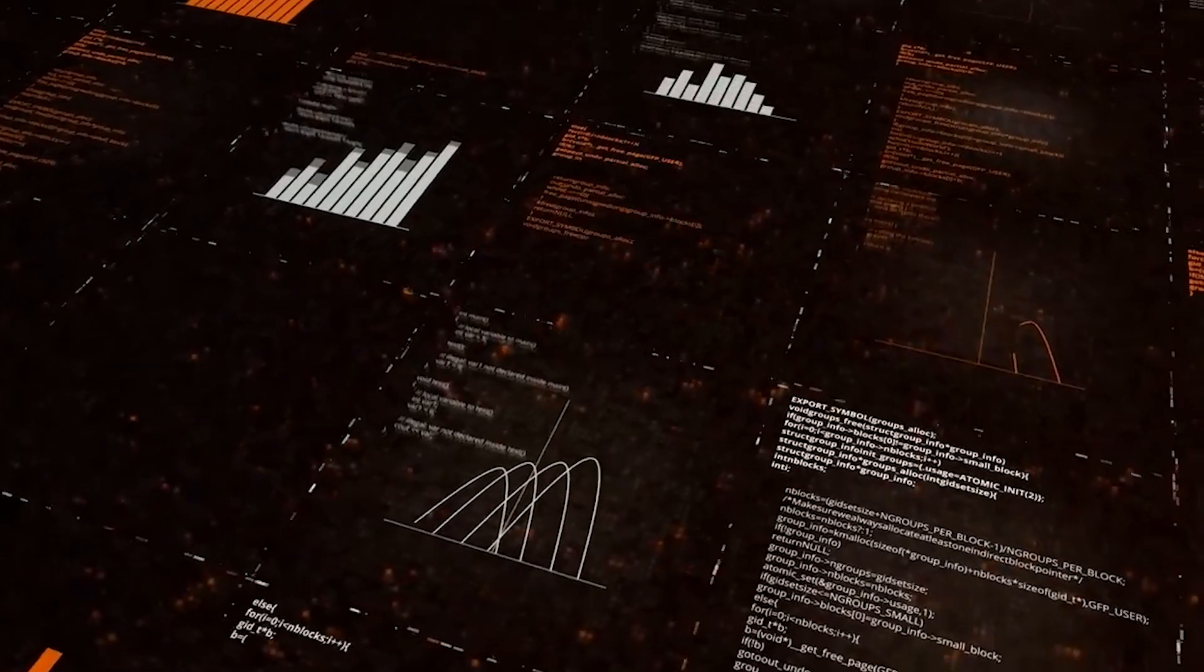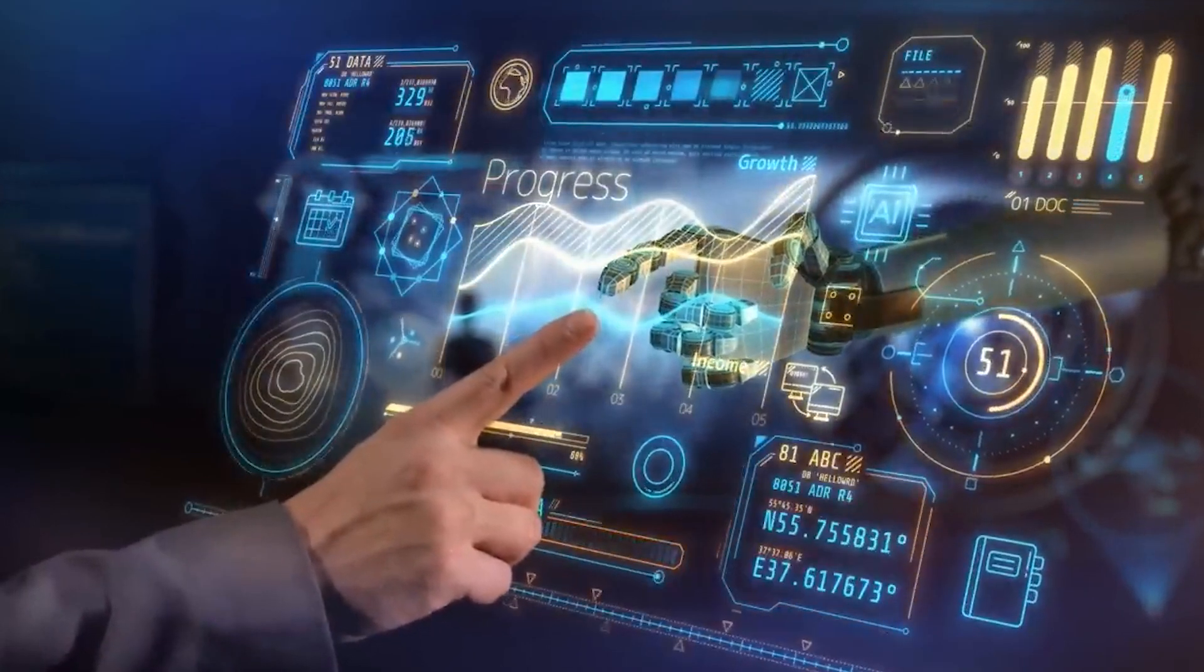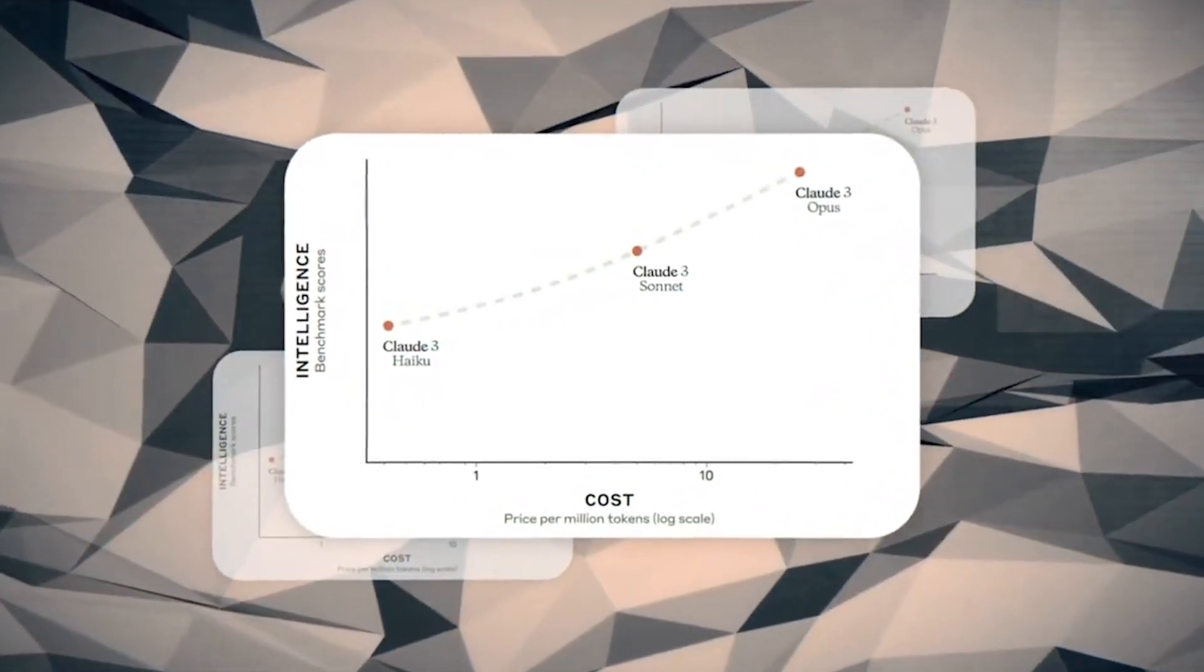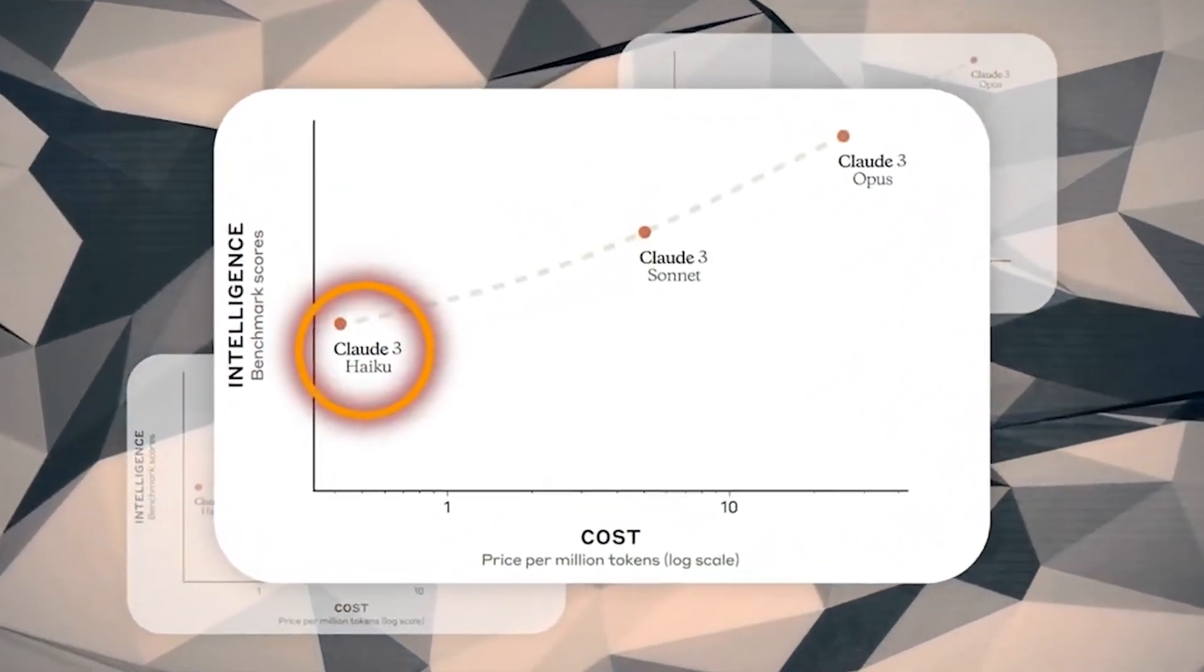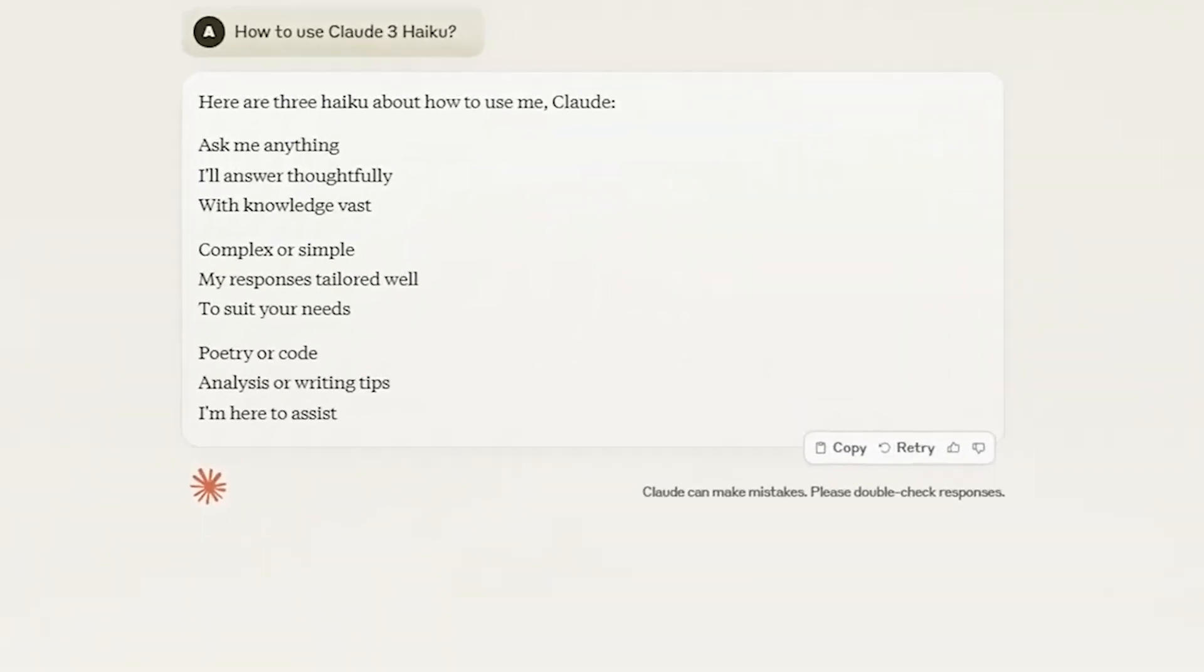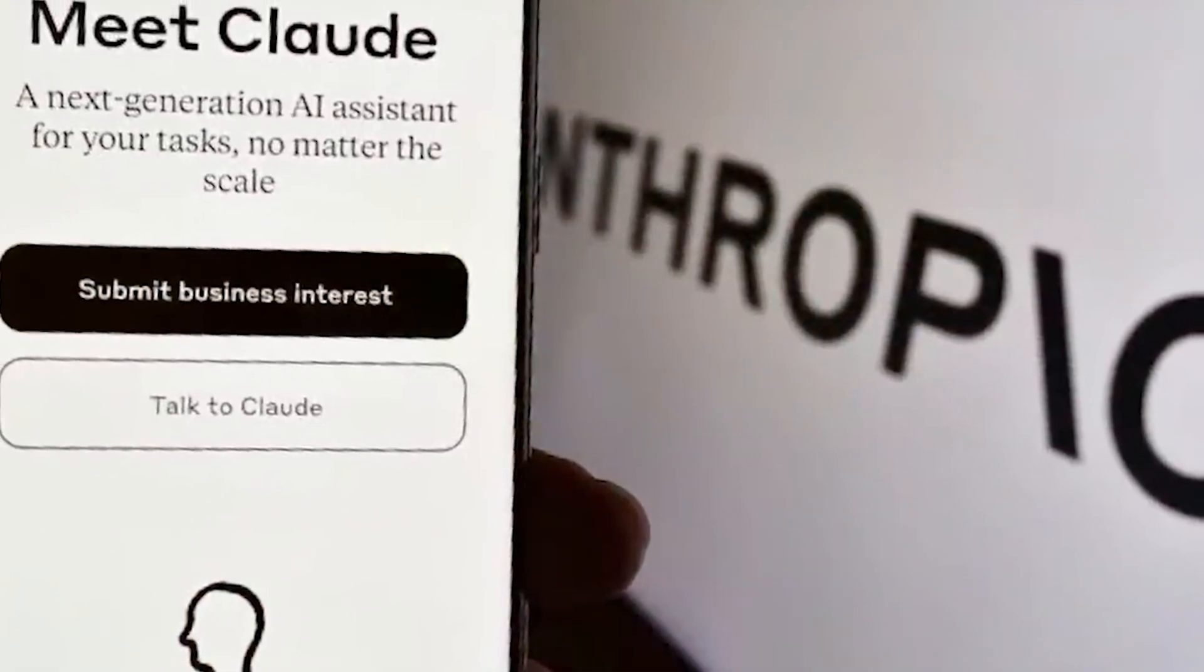The CLOT3 models can support live customer chats, auto-completions, and data extraction tasks, where responses must be immediate and in real-time. Haiku is the fastest and most cost-effective model on the market for its intelligence category. It can read an information and data-dense research paper with charts and graphs in less than three seconds. Following launch, the performance is expected to improve even further.